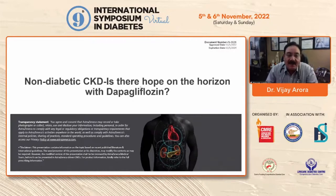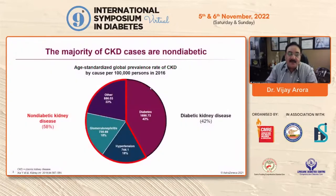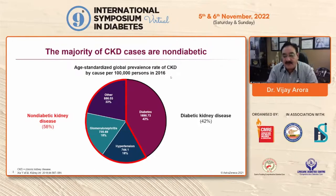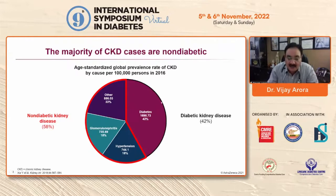The burden of non-diabetic CKD and the cardiorenal connections: the majority of CKD patients are non-diabetic, around 58%, as published in Kidney International in 2018. 42% of patients suffering from CKD are diabetic. Of the 58% non-diabetic kidney disease patients, 18% are due to hypertension, 18% due to glomerulonephritis, and 22% are others.